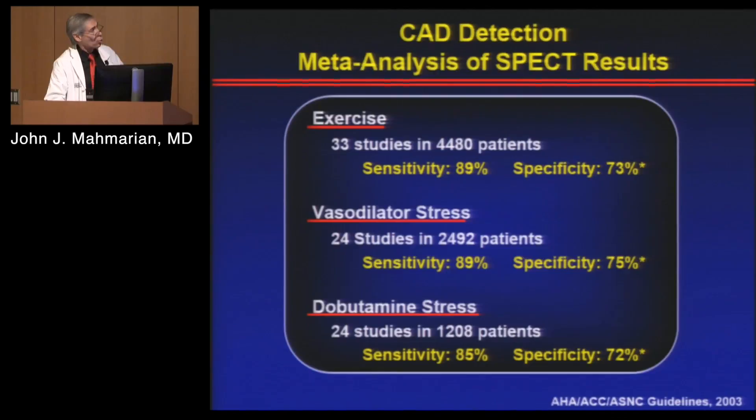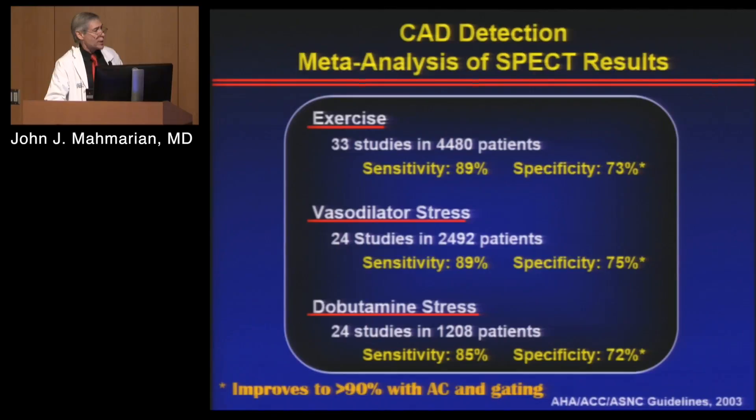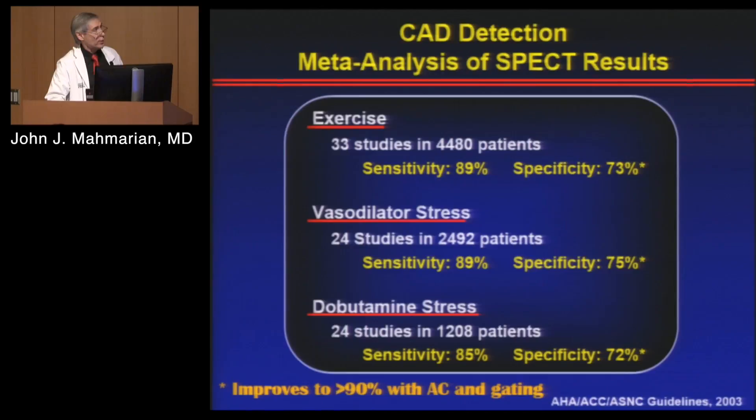For CAD diagnosis, across the board — whether exercise, vasodilator stress, or dobutamine — you have fairly good sensitivity of almost 90%. Specificity in the old days was relatively low, but now is greater than 90% if you use attenuation correction and gating to help identify false positives or artifacts. We have good results with SPECT imaging. PET imaging shows 90% sensitivity and 80-something percent specificity, very similar to SPECT imaging in pooled analysis.